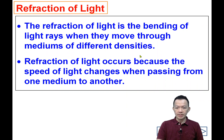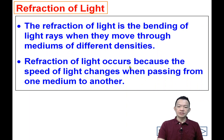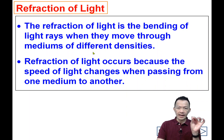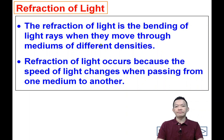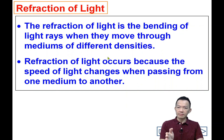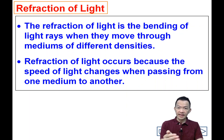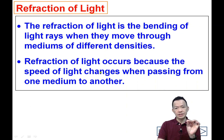The deflection of light occurs because the speed of the light changes when passing from one medium to another. So when the light moves from one medium and enters another medium with different density, the speed of the light changes.